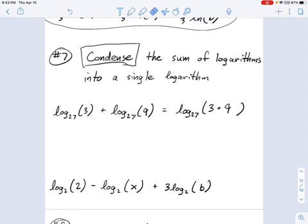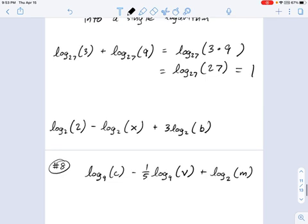Once you have that 3 times 9 in there, you can say that's just 27. And every now and then you'll have something that works out cute, like in this example, where log base 27 of 27, well that's just equal to 1. So that's a bit of a math joke right there.